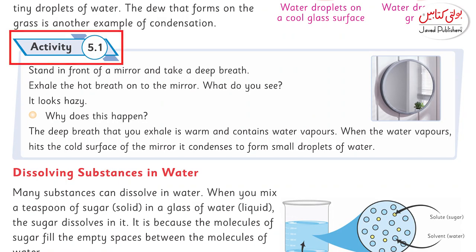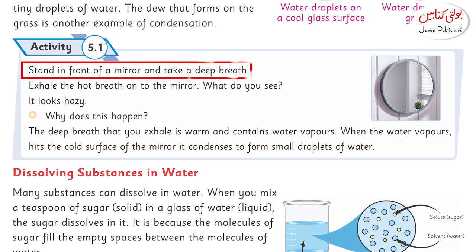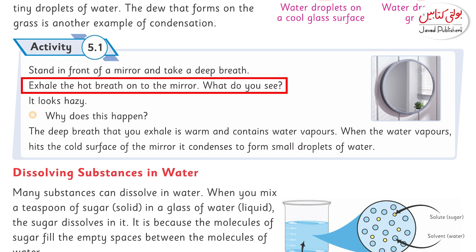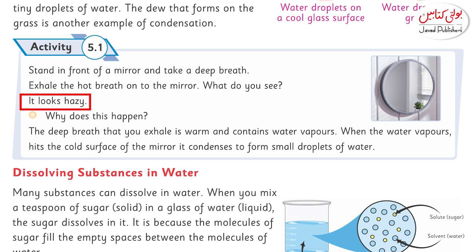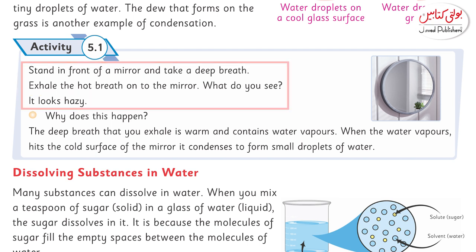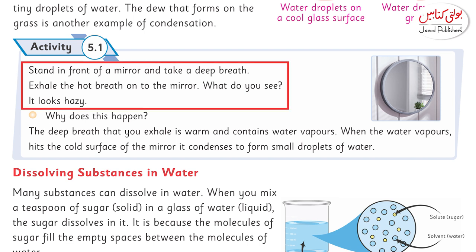Activity 5.1, page number 41: Stand in front of a mirror and take a deep breath. Exhale the warm breath on the mirror. What do you see? It looks hazy. What is happening when you breathe onto the mirror?